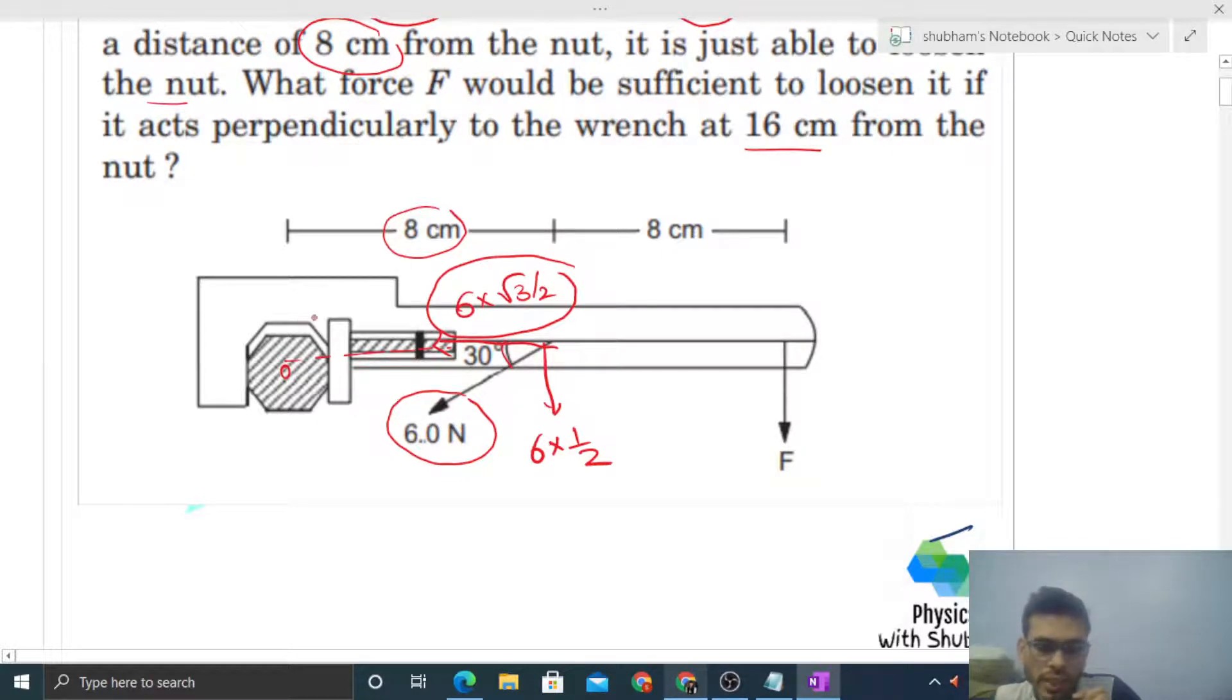Because this nut will rotate, we're taking torque about the center of the nut. The perpendicular component is 6 × 1/2, that is 3 N.